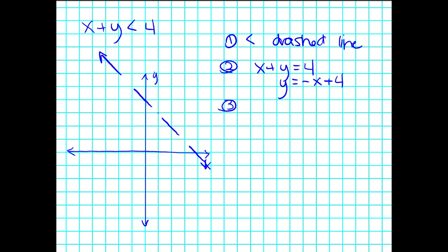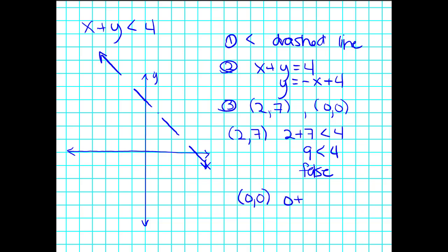Third step: we're going to select a point on the right of the line and to the left to see which is true. I'll select 2, 7 and also 0, 0. Plugging in 2 and 7: 2 plus 7, is that less than 4? Is 9 less than 4? That's false. Now let's try 0, 0: 0 plus 0 is less than 4 — 0 is less than 4, that is true. So wherever 0, 0 is, that's the side of the line I'm going to shade in.